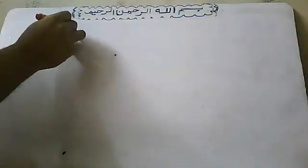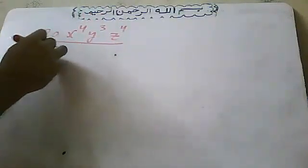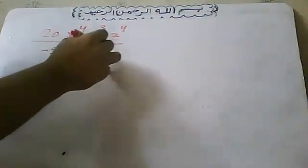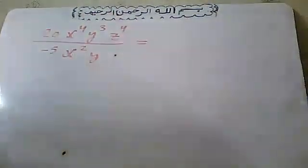For example, 20x⁴y³z⁴ over -5x²y. How will we do this?